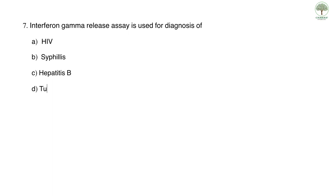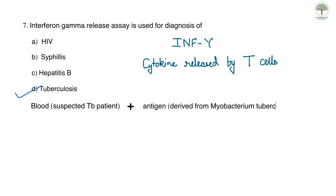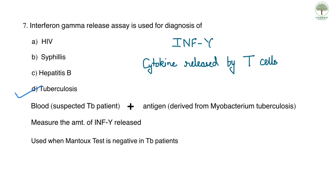Question seven: interferon gamma release assay is used for the diagnosis of which condition? The correct answer is D, tuberculosis. Blood from suspected tuberculosis patients is mixed with antigens derived from Mycobacterium tuberculosis and the amount of interferon gamma — a cytokine secreted by T cells — released is measured. This test is only used when Mantoux and other diagnostic tests are negative. It is also used for cytomegalovirus infection and leishmaniasis, both of which have cell-mediated immune responses.